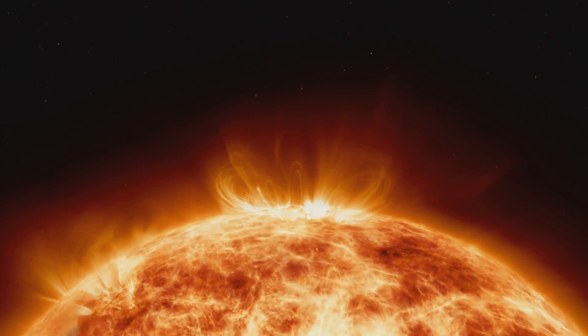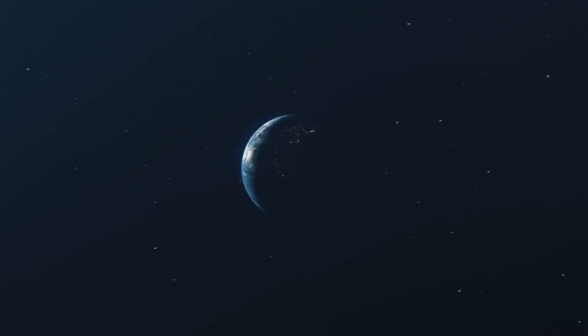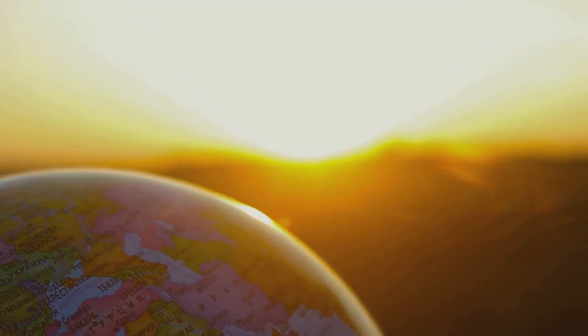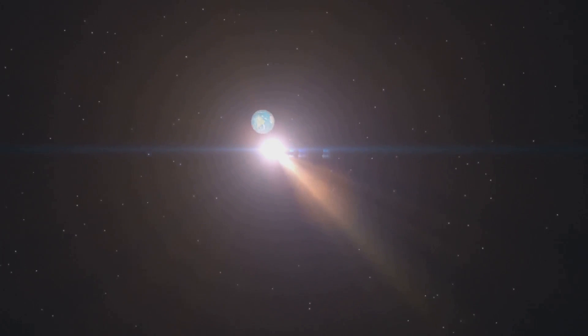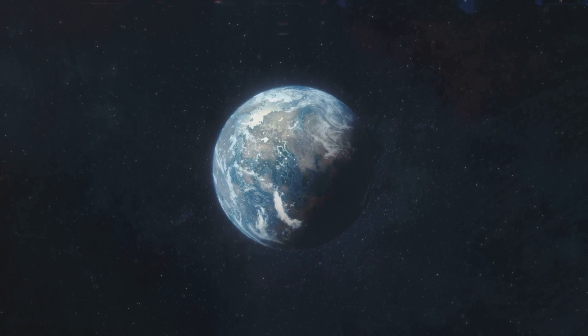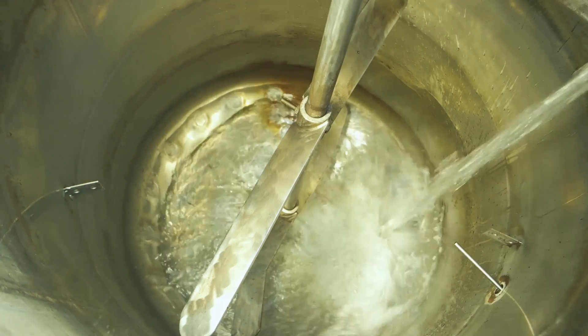The sun's gradual brightening has profound consequences for Earth's future. As the sun gets brighter, more energy reaches Earth, slowly warming our climate. Over hundreds of millions of years, this extra energy will disrupt the balance that keeps our oceans liquid and temperatures suitable for life.